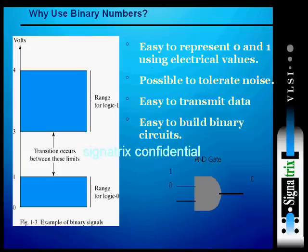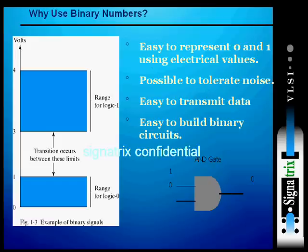For an example of a binary signal, we can see how the waveform increases from zero to one. That range is for logic zero, which is the reset state. The transition occurs between the limits one and three volts, and the range for logic one is the set condition. For an example, here is an AND gate which shows, according to the input values — one and zero — the output gives a zero, because for the AND gate circuit, only when we have two high values will the result be a high value.